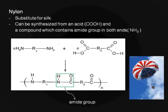Nylon, the world's first synthetic fibre, was invented by Wallace Carothers in 1935. It was not available to the public until after World War II, but was used extensively by the military for parachutes and tanks.